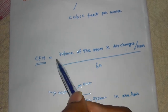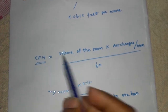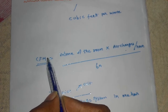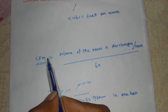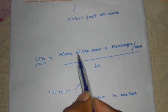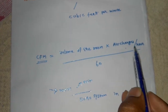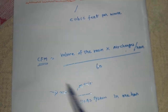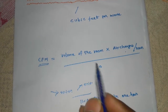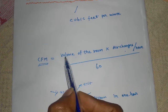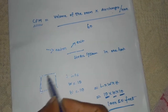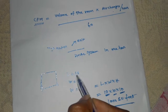If you know the CFM of the fan, you can easily calculate the air changes per hour using this formula. Let us consider a room as an example.